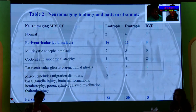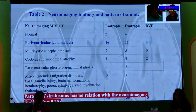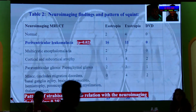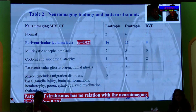Comparing neuroimaging findings with the pattern of strabismus, there is no significant pattern showing association. Pattern of strabismus has no relation with neuroimaging findings overall. However, in periventricular leukomalacia, 16 esotropic patients out of 23 had PVL as the most common finding, and 11 out of 30 exotropic patients had PVL as the most common neurological finding. This is statistically significant — if PVL is present, squint is more likely to be present.